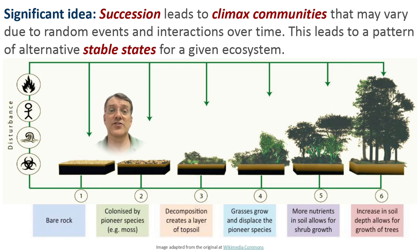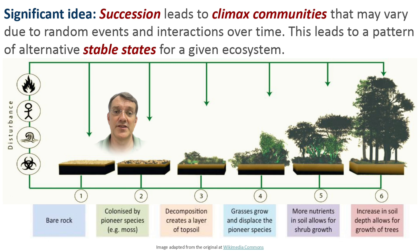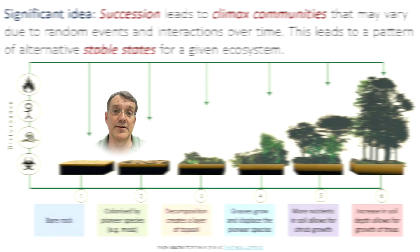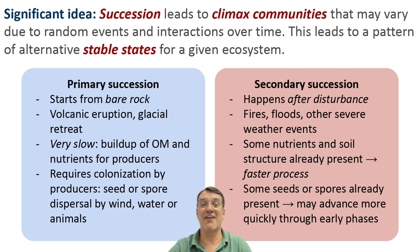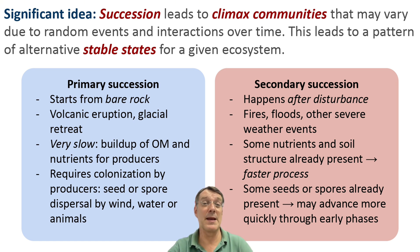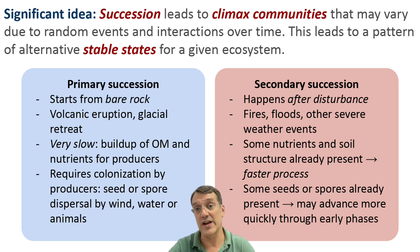Succession is the process that leads to climax communities. It proceeds through stages called seres from pioneer species colonizing bare rock to increasingly complex communities. There are two main types of succession. Primary succession starts from bare rock or substrate with no prior soil development — this usually happens after a volcanic eruption. Secondary succession occurs after a disturbance to an existing ecosystem, like a fire or a flood, where some soil and organic matter remain behind. Secondary succession generally proceeds much faster since some resources and nutrients are already present.